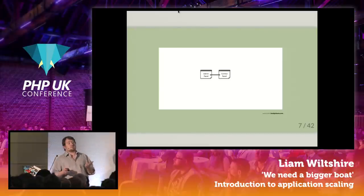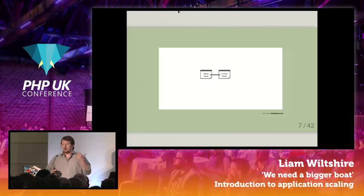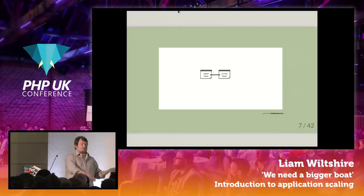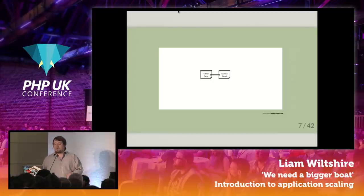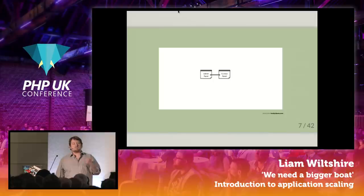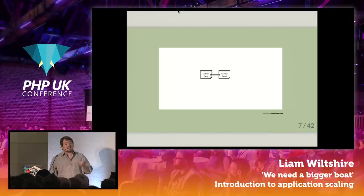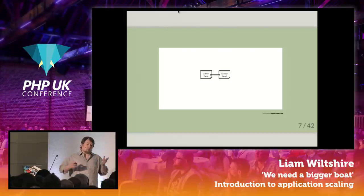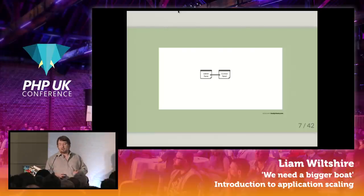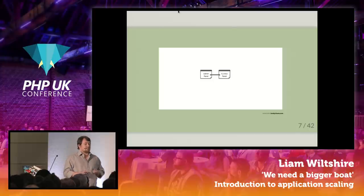The customer control panel obviously gets a lot of use because all of our customers log in and use it. It does all the customer reporting; it's where customers go to set up their products, set up their categories, integrate their servers, whatever else. So it's not just pulling data from the database — we use some third-party services such as Keen to do reporting. But again, it's in Laravel, it's fine. Then it gets interesting.